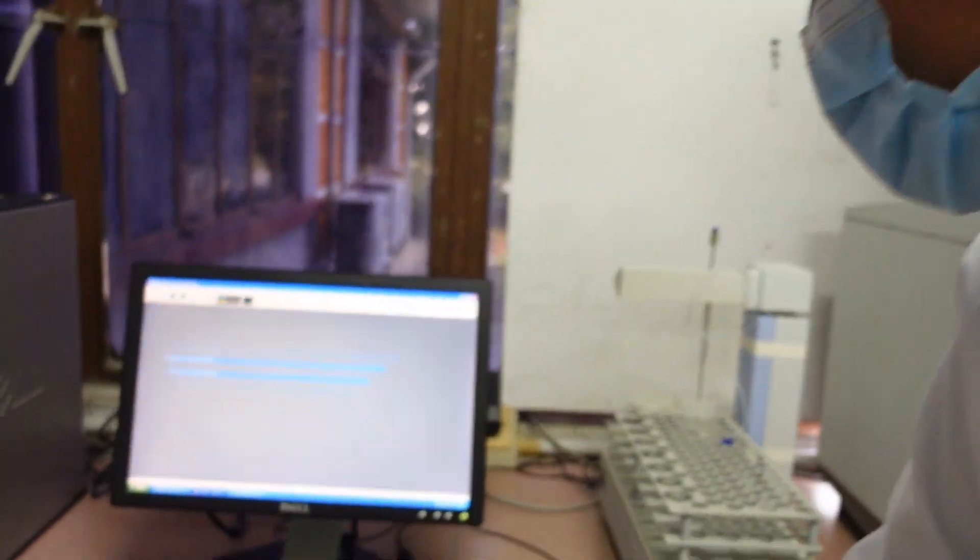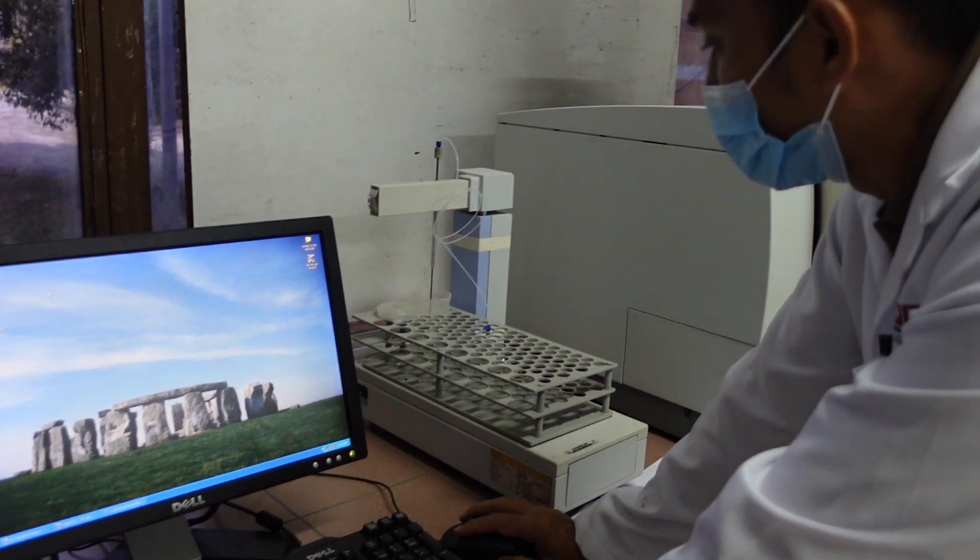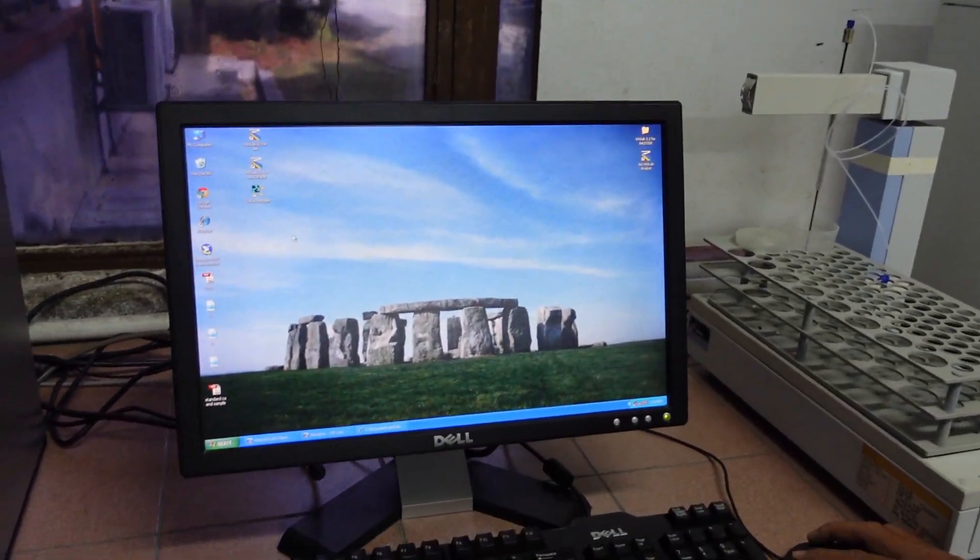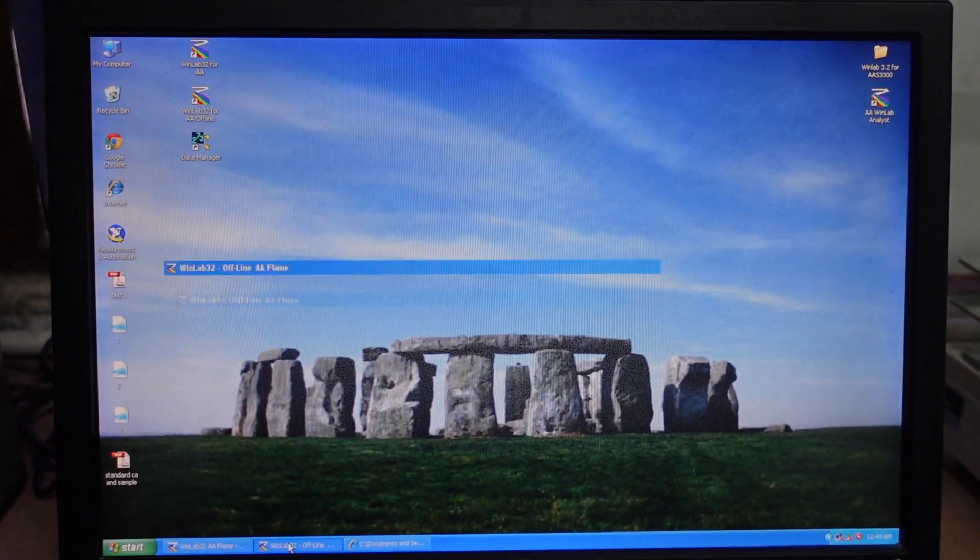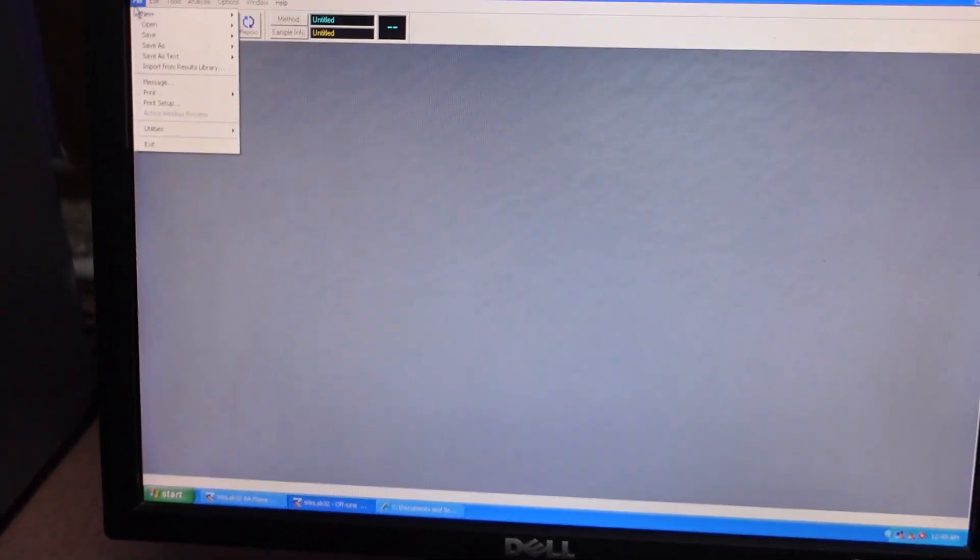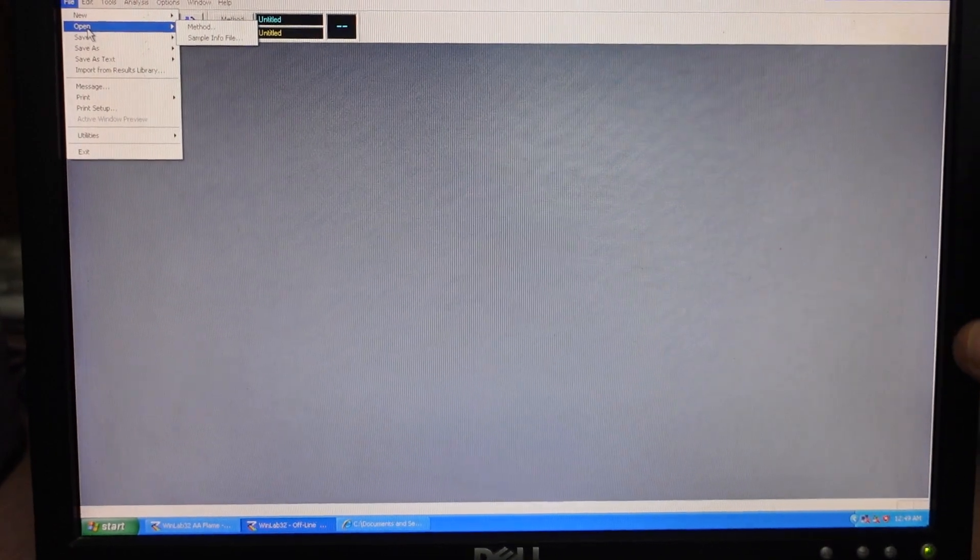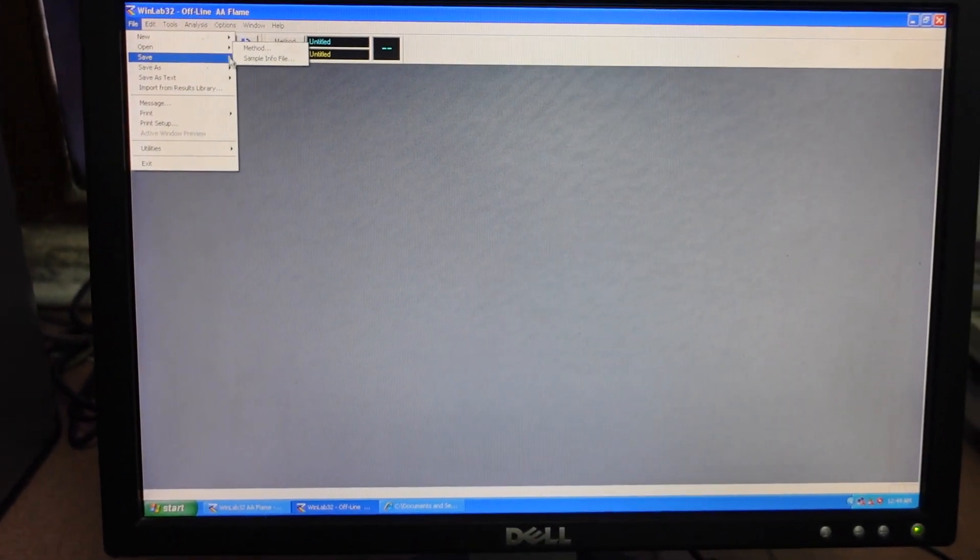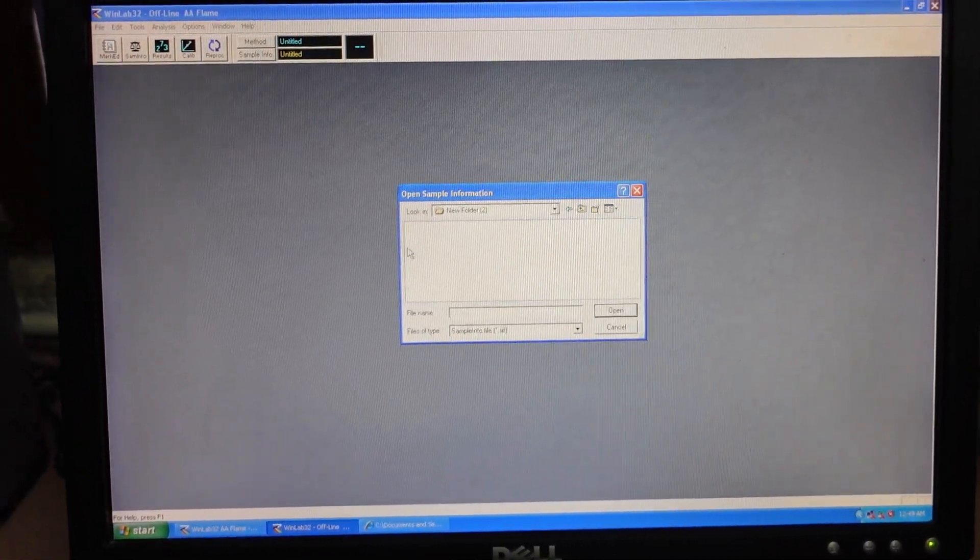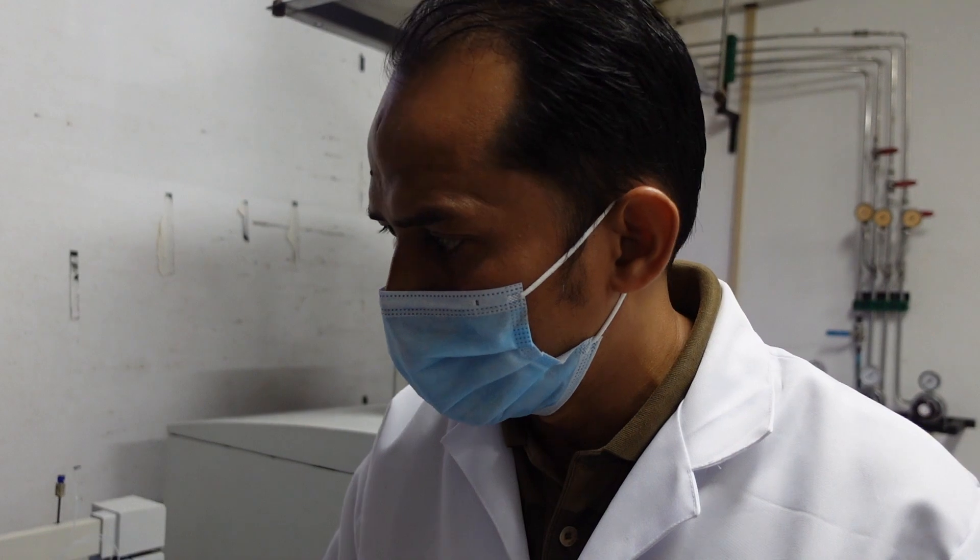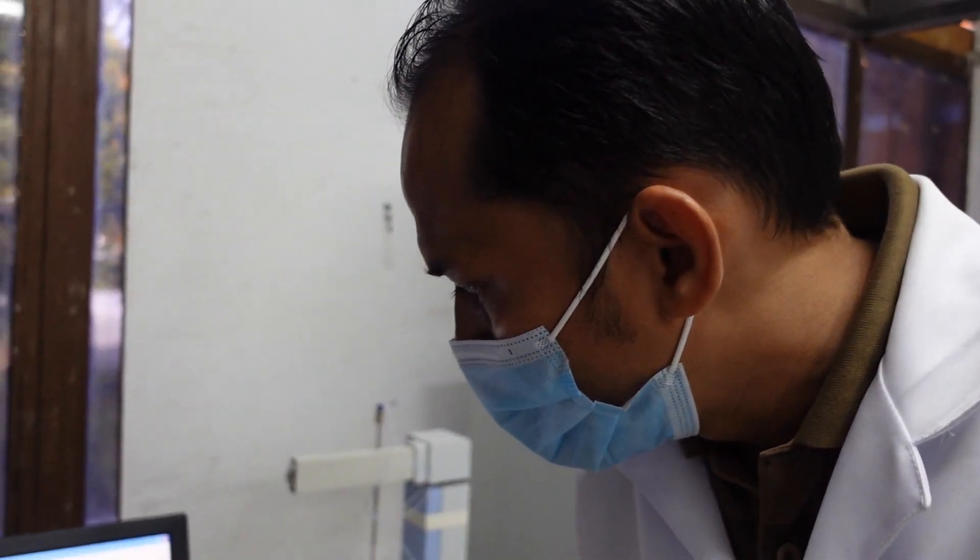In the PC, we have a dedicated PC for this machine. To run the machine, you need to open the software first, WinLab32. You click on this. You can see an interface like this. Normally we already install all the method inside the computer. Let's say you want to run calcium in milk, you just choose the method that's already installed. Open and browse your method from the system, and the system will pop up for you. Just in case you are doing some modification, you need to run the setup all over again. You have to choose the right wavelength, the right lamp, and so on. Just follow the protocol.